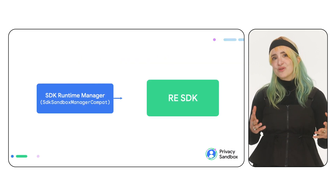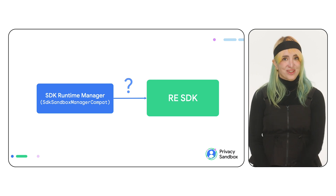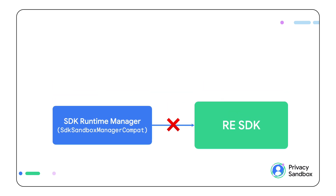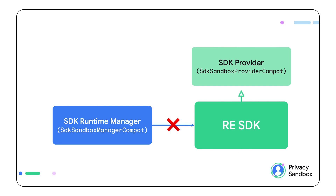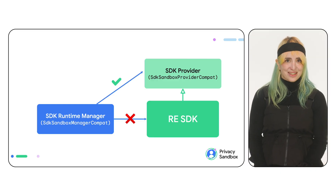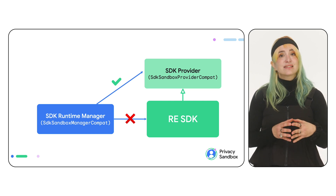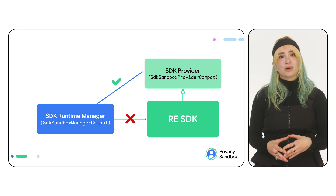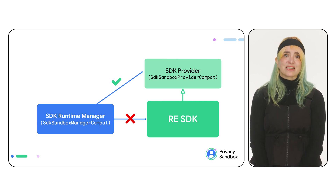So how does the manager know an SDK to operate with it? It doesn't — or not this runtime-enabled SDK specifically. Rather, the runtime manager knows that all RE-SDKs will extend the SDK provider, an abstract class which is actually called SandboxSDKProviderCompat, that provides the functionality needed. So what does this mean for SDK developers? Basically, it means that your SDK has to extend SDKProvider. We will talk more about this in the episode dedicated to building RE-SDKs.